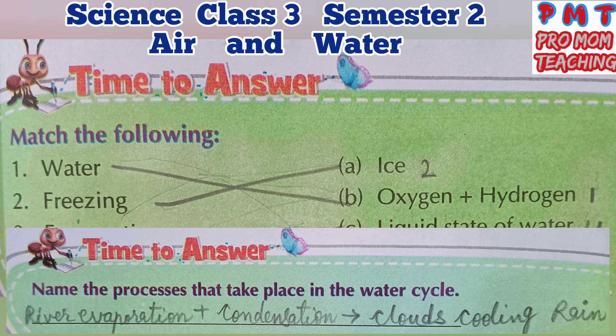Name the processes that take place in the water cycle. Due to the heat of the sun, water evaporates from rivers, ponds, lakes and oceans and goes up as water vapor. When water vapor goes high in the sky, it comes in contact with cold air and condenses to form tiny drops of water. These tiny drops cling together to form clouds. On further cooling, these drops become heavy and fall as rain. The rain water then flows down into ponds, rivers, lakes and oceans, from where it again goes up due to the heat of the sun. This process is known as the water cycle.